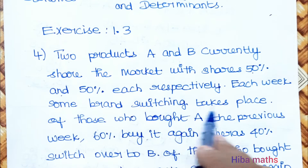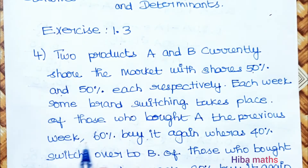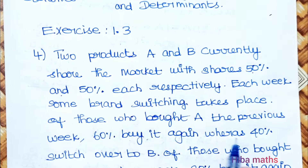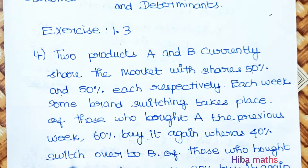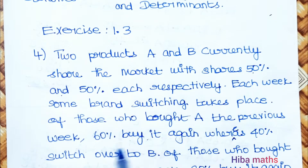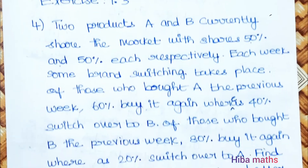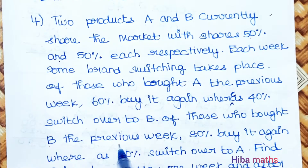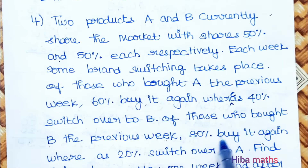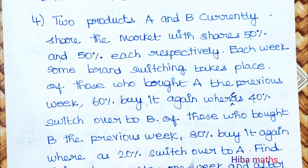Brand switching takes place: of those who bought A the previous week, 60% buy it again whereas 40% switch over to B. Of those who bought B the previous week, 80% buy it again whereas 20% switch over to A.